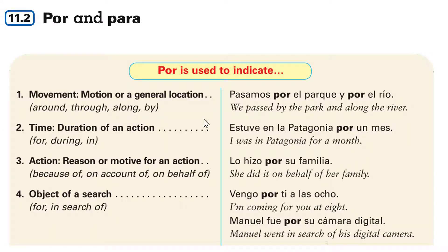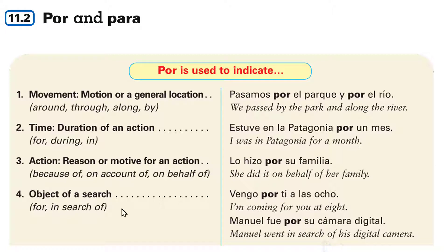Here they give us some more examples. For movement: pasamos por el parque y por el río. Time — how long did you do this for? Estuve en la Patagonia por un mes. Action — or why? The reason, what drives you: lo hizo por su familia. And then the object of search: vengo por ti.